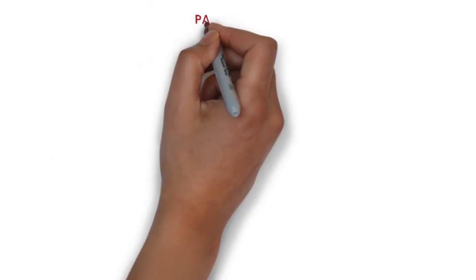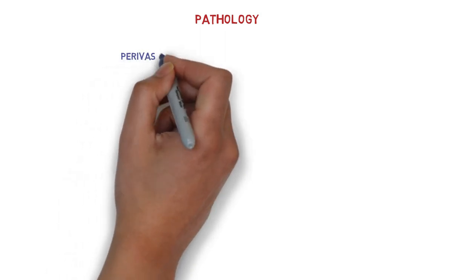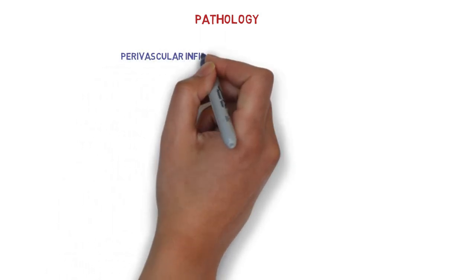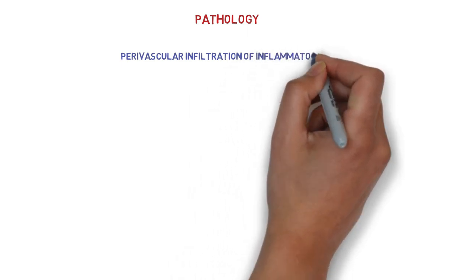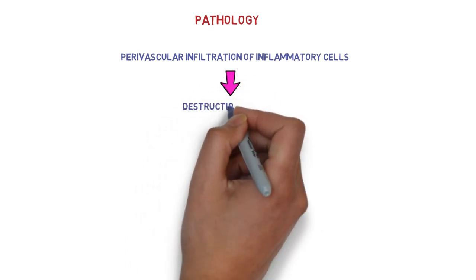What is pathology behind optic neuritis? First, there is perivascular infiltration of inflammatory cells, which is occurring due to the inflammation. Due to this perivascular infiltration, there is destruction of myelin.